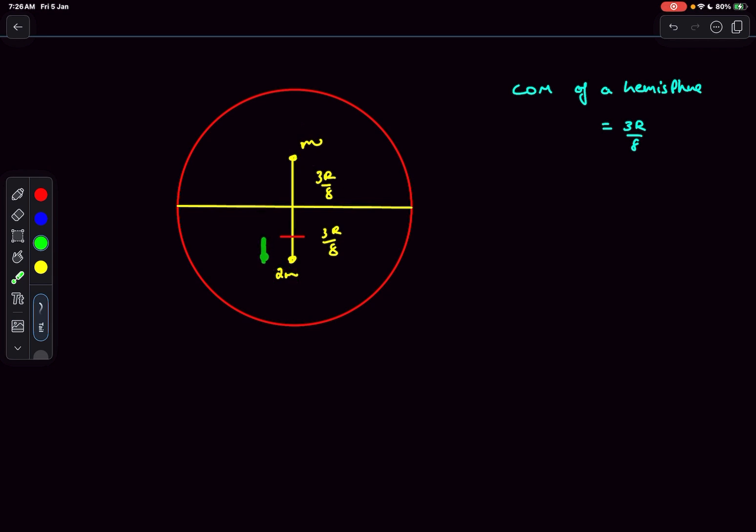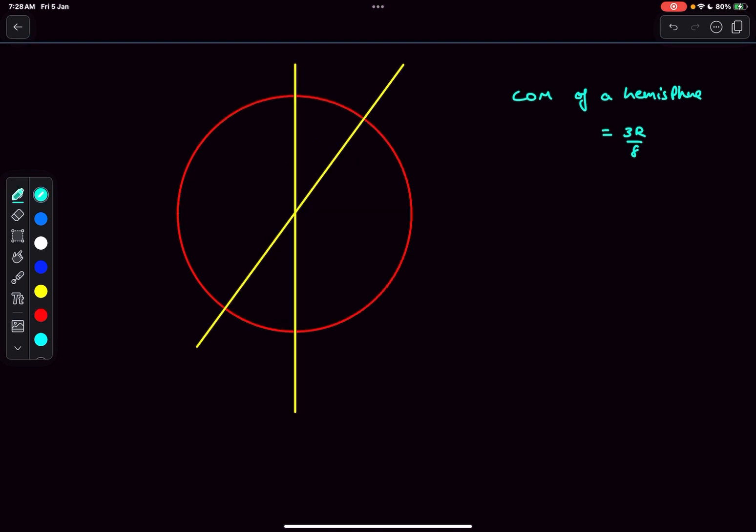This green distance is going to be one-third of the total distance, and the total distance is 6R by 8, so one-third of it is 2R by 8. You could simply say that the distance from this horizontal line is R by 8. Basically, the center of mass is at a distance of R by 8 below the horizontal line.